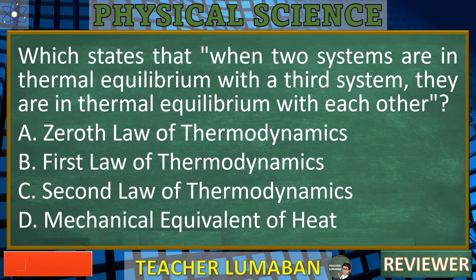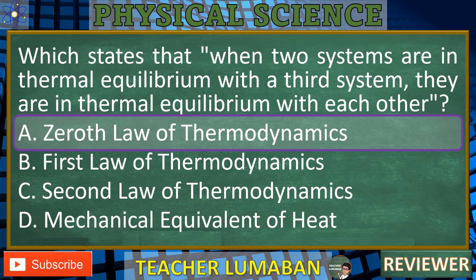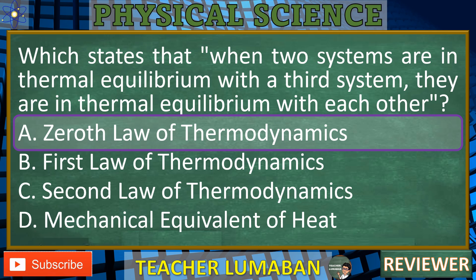The statement 'when two systems are in thermal equilibrium with a third system, they are in thermal equilibrium with each other' is a principle of the Zeroth Law of Thermodynamics. The correct answer is A. If two systems are each in thermal equilibrium with a third system, then they are in thermal equilibrium with each other. This law is fundamental in defining temperature and ensuring that temperature is a consistent and transitive property for thermal systems.